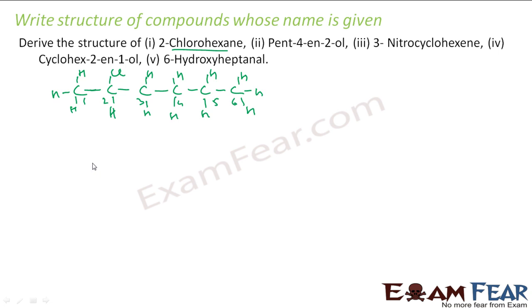Pent-4-en-2-ol. So pent means 5 carbon: 1, 2, 3, 4, 5. Pent-4-en means at 4th position I have 1 double bond. 2-ol means at second position I have alcohol.